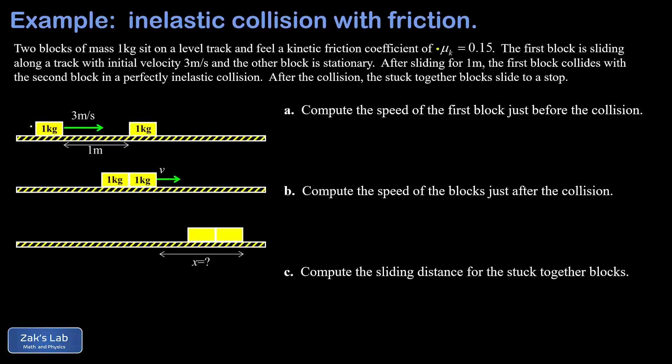So in our initial state, one of the blocks is moving with a given initial velocity of 3 meters per second, and it slides through one meter before the impact occurs, and during that one meter, it's slowing down.